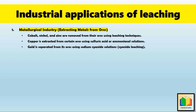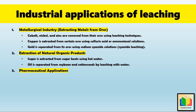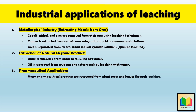The second application is extraction of natural organic products. Leaching helps to separate naturally occurring substances from their original structures. For example, sugar is extracted from sugar beets using hot water, and oil is separated from soybean and cotton seeds by leaching with a solvent. The next application is pharmaceutical applications. Leaching plays a vital role in extracting medicinal compounds from plants, as many pharmaceutical products are recovered from plant roots and leaves through leaching.